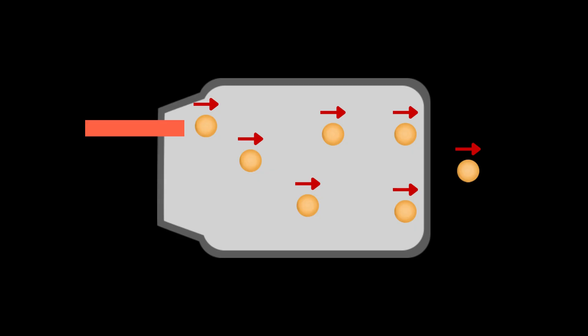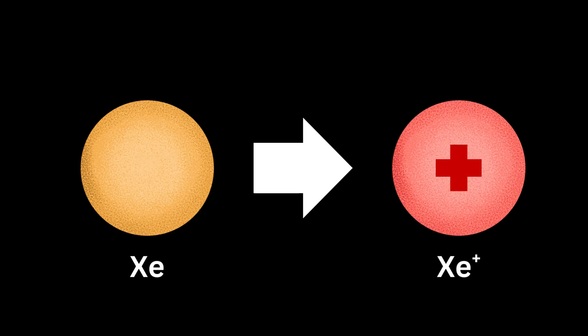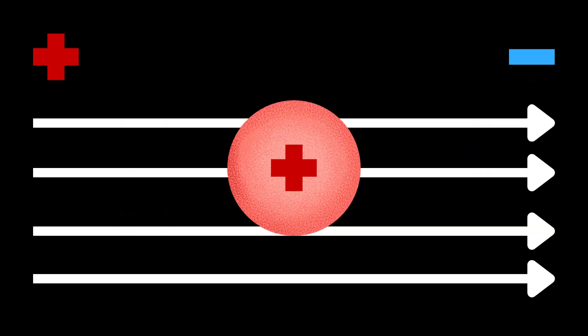To generate thrust, the xenon gas must first be ionized into plasma, an ionized gas, allowing us to accelerate the atom using an electric field.